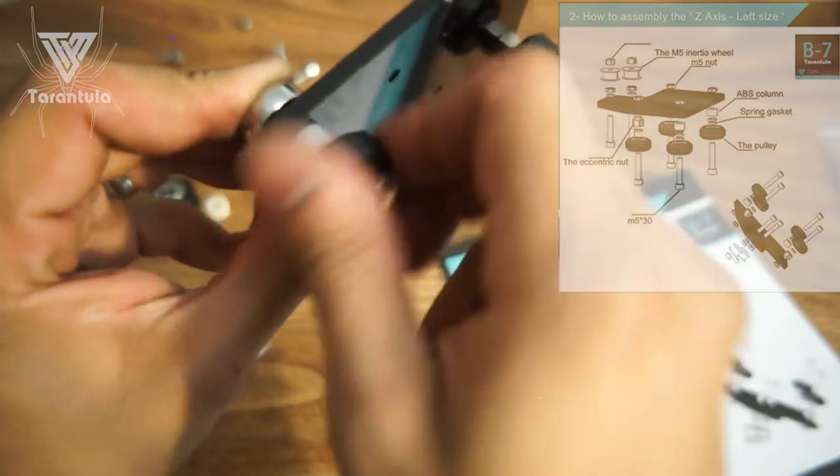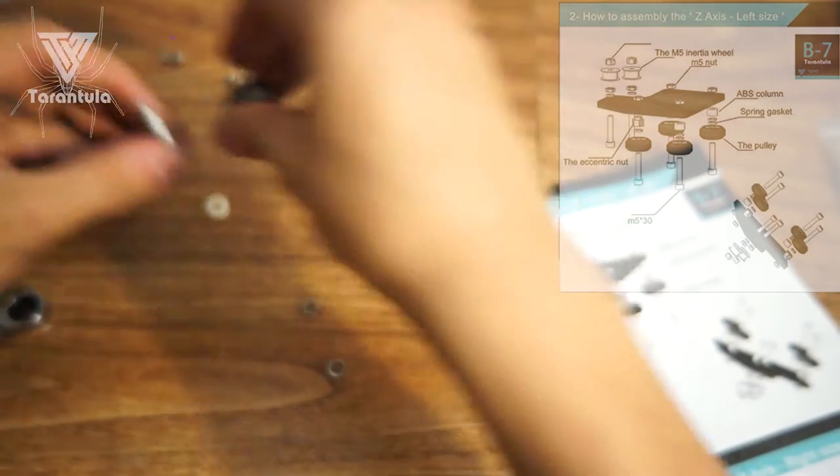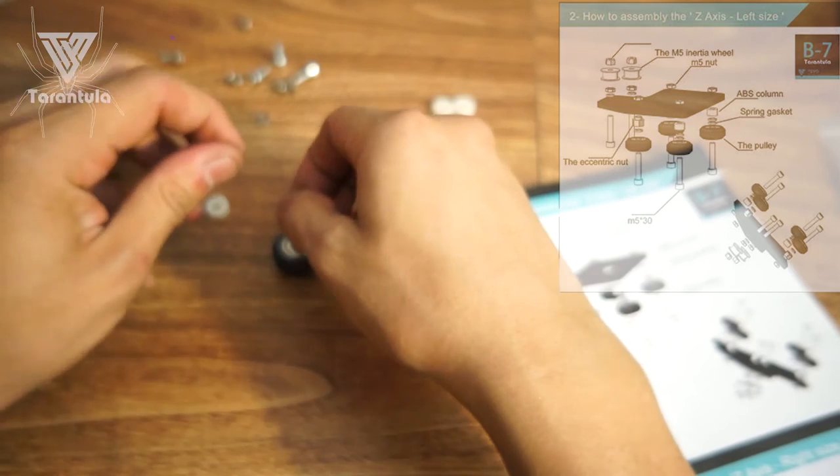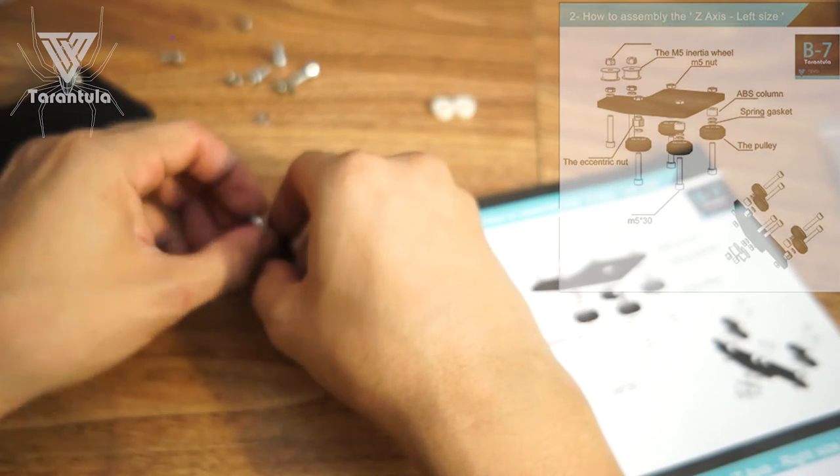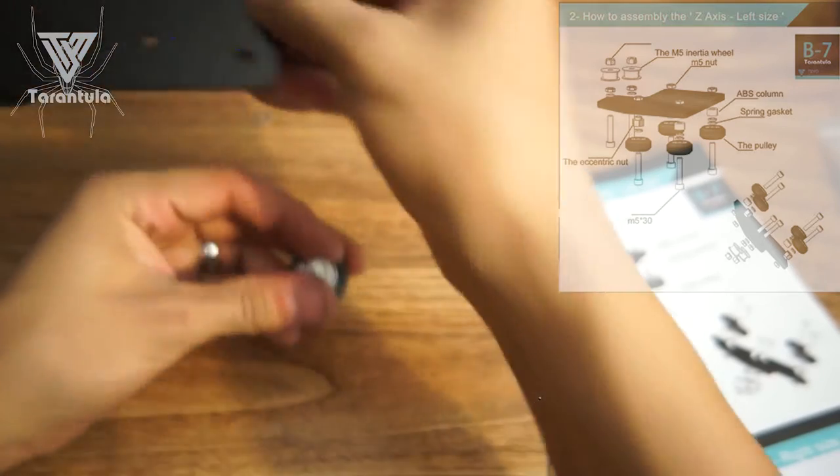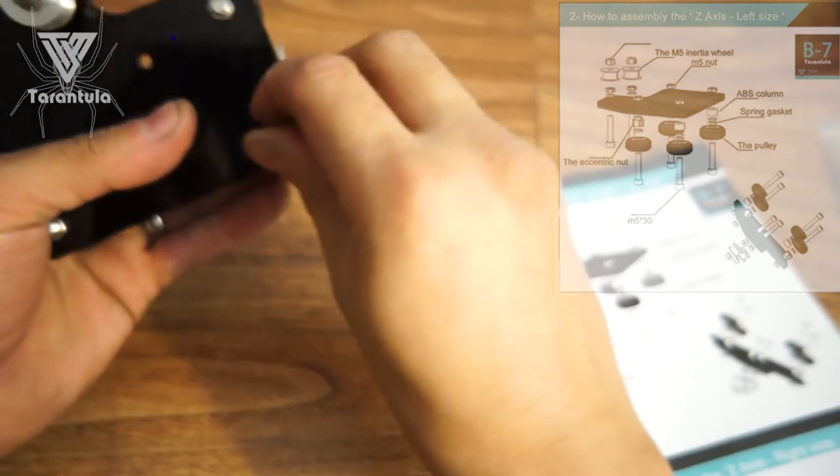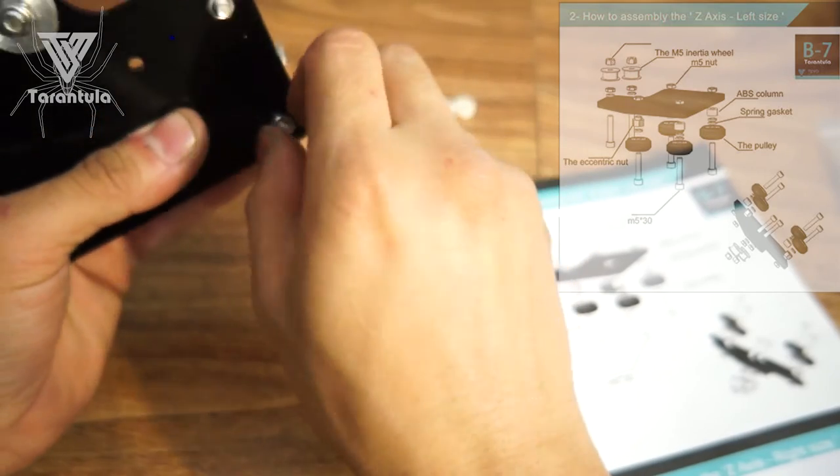Alright, next one. Bolt, bearing, two spring washers, nylon washer, and then nut. Through the small hole. And yay.